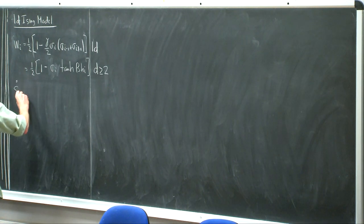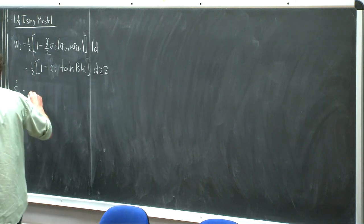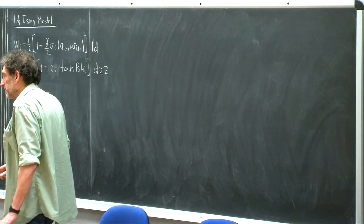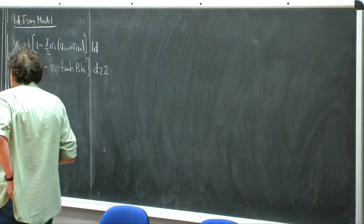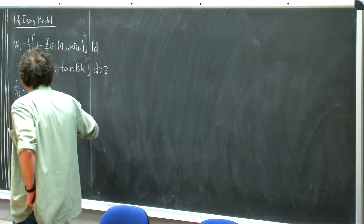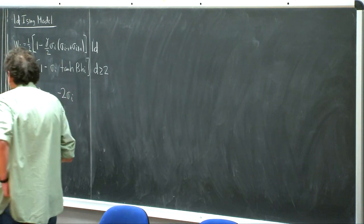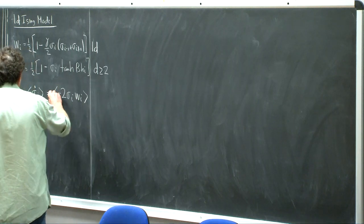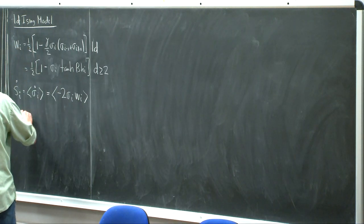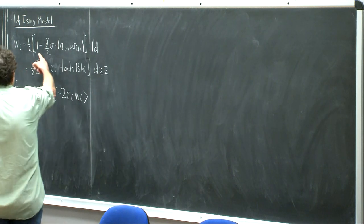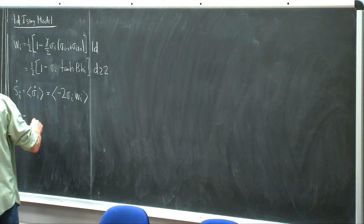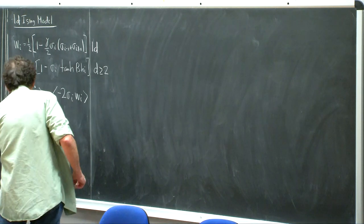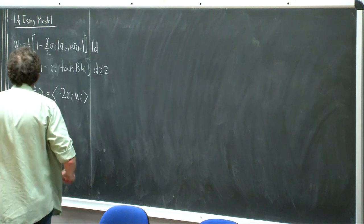There's the equation of motion for the mean spin, s_i dot, which is the thermal average of sigma_i dot. When we write down the rate equation for the average spin — when a spin flips, it changes by minus twice its value, so the change is minus 2 sigma_i. The rate at which it flips is w_i. So we have this simple dynamical equation for the spin evolution.